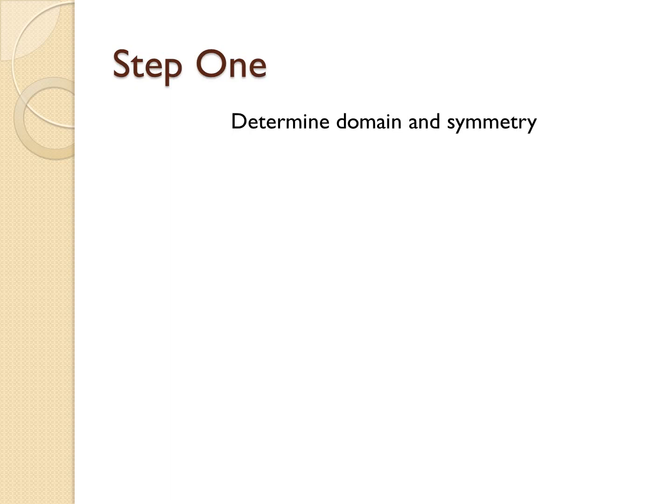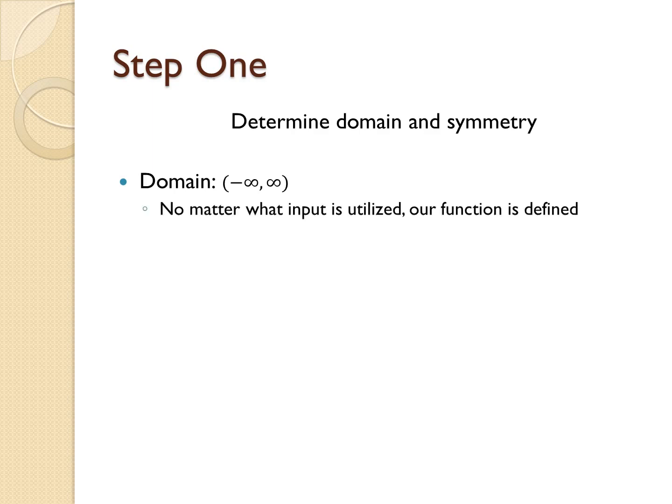For step one, we need to determine the domain and symmetry of our function. The domain is all real numbers, or in interval notation, negative infinity to infinity. This is because no matter what input is utilized, our function is always defined — we will always have some output.